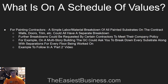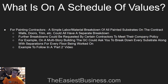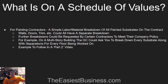Further breakdowns than that could be requested by certain contractors to meet company policy — it all depends on what GC you work for, because every GC is different and requires different information on their schedule of values. For example, if you're doing a large multi-story building and you're painting walls, doors, and trim on five floors, they may want a walls, doors, and trim breakdown for every single floor.